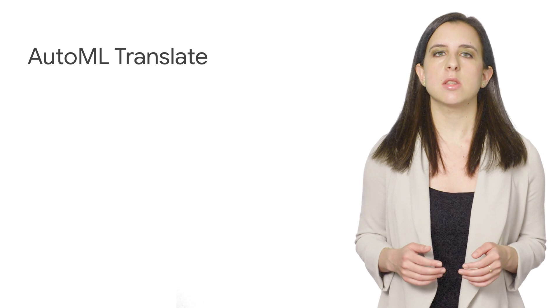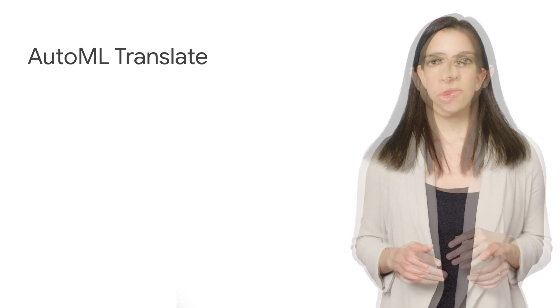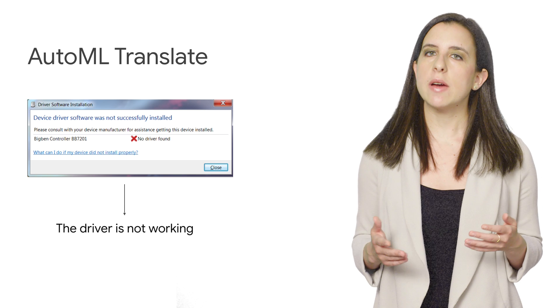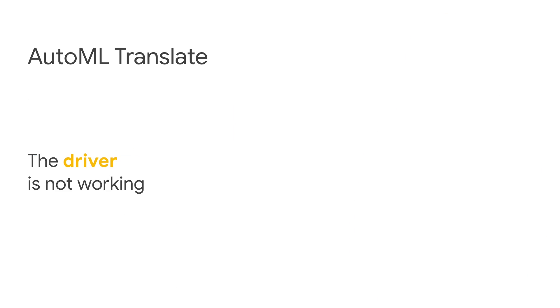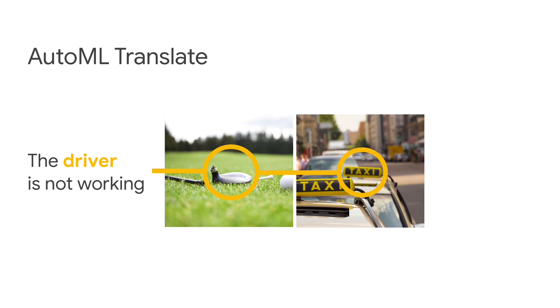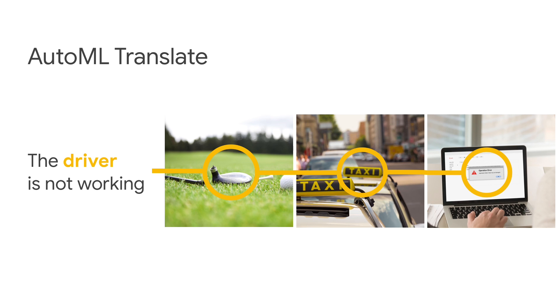AutoML Translate lets you build domain-specific translation models for translating industry-specific jargon and linguistic nuances. There are many instances where the Cloud Translation API will work just fine, but certain cases require a translation model trained on your own custom data. For example, let's say I see an error message that I can summarize as 'the driver is not working.' Taken out of context, the translation is ambiguous — it could refer to a broken golf club driver, or a taxi driver who is on strike. A base model wouldn't know which domain it's referred to, and this is where a custom model comes in handy. I showed a live demo of AutoML Translate using data provided by our customer WeLocalize.